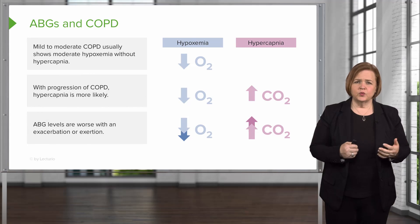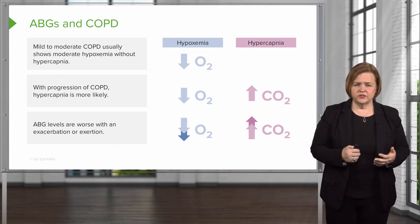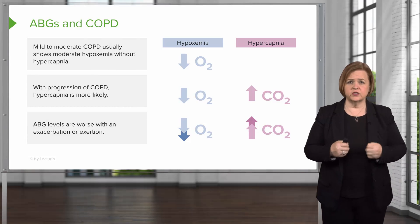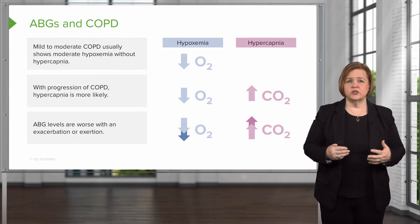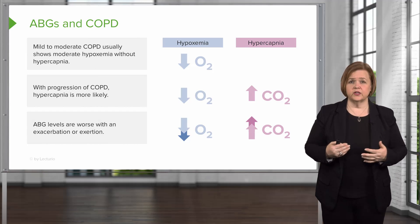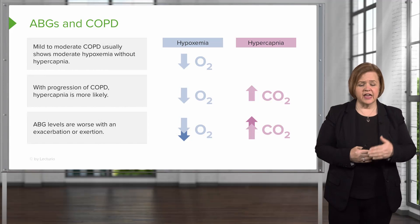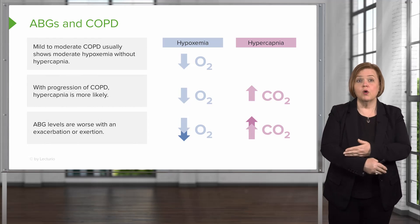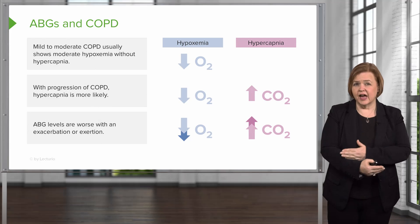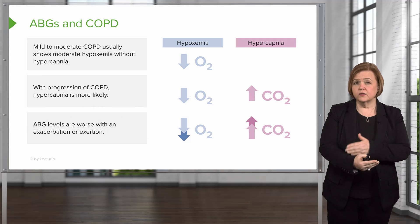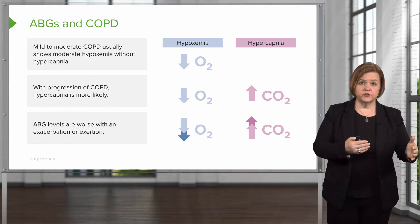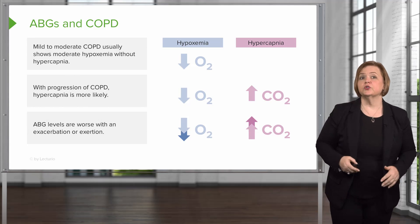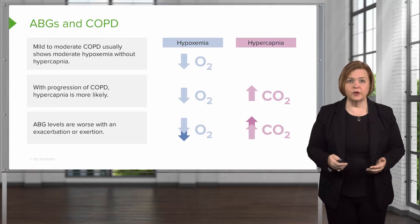ABGs are often worse with an exacerbation or with exertion — if the patient's had a lot of activity or an exacerbation of COPD, those values are going to be worse. It's always a good idea to look at trends because ABGs only show you what was going on at that exact moment you drew the arterial blood gas sample. Do you have other values? Do you have trends of before and after treatment? Those are critically important things to help you put the whole puzzle together.